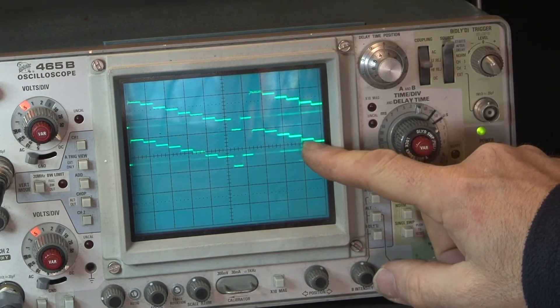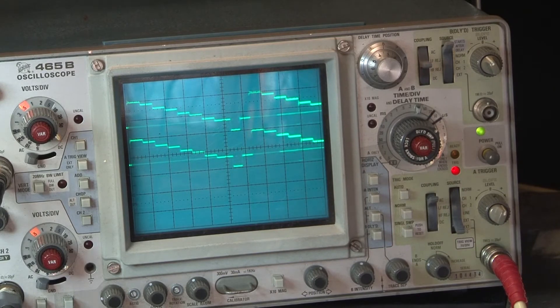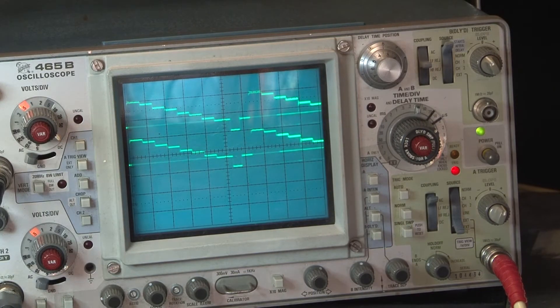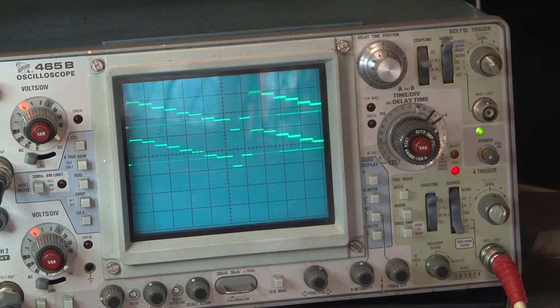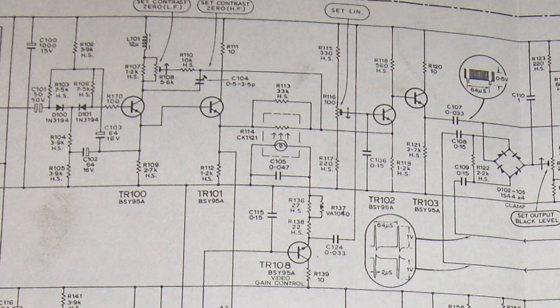And hey presto we have our signal. So it looks like the fault is now somewhere beyond TR101 which leaves a few components, well only TR102 and 103 could be suspect. Now I've actually taken those components out and measured them on the transistor tester and they are ok.